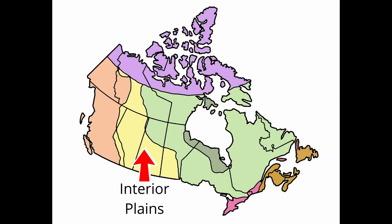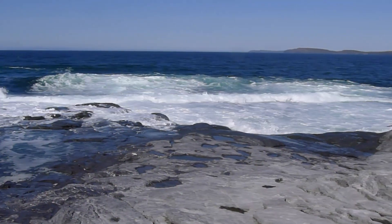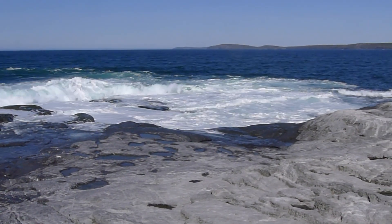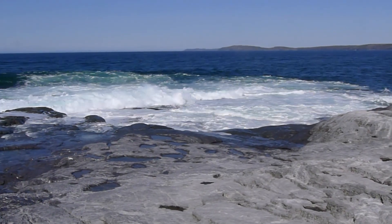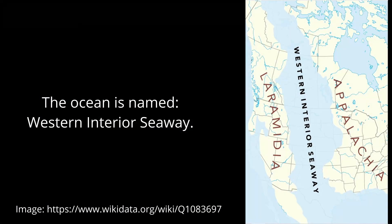Conversely, the interior plains underlie the Canadian prairies. This physiographic region, which lies west of the Canadian Shield, occupies a little less than 20% of Canada by area. In relatively recent geological history, say within several hundred million years, an ancient ocean formed along the west side of the Canadian Shield. That ocean is called the Western Interior Seaway.